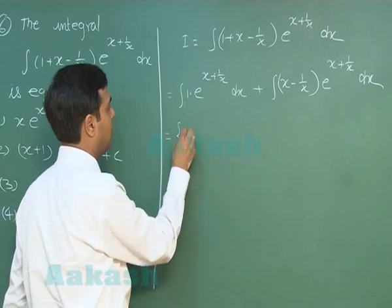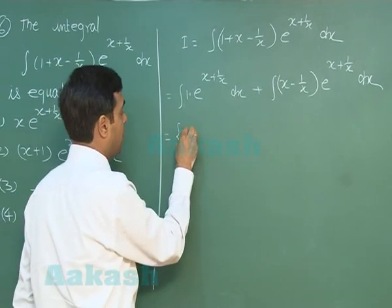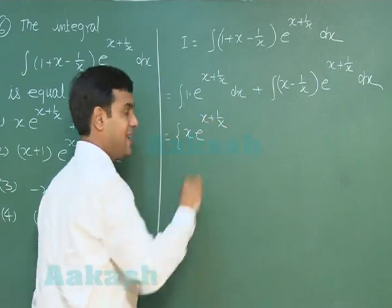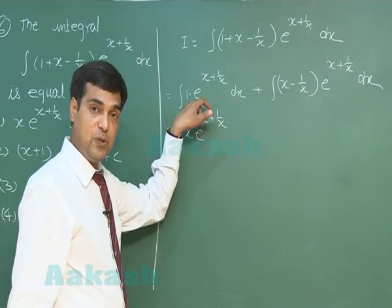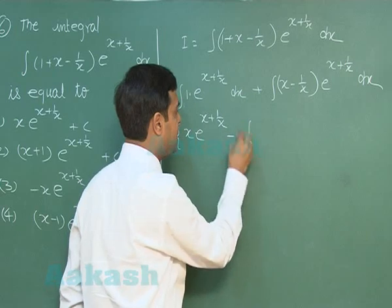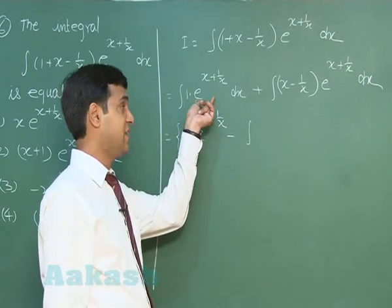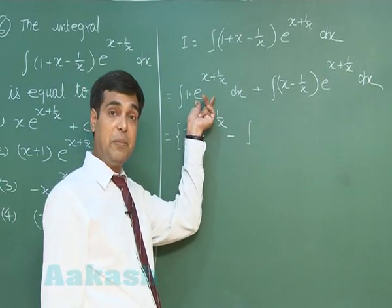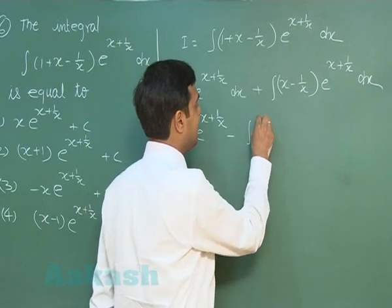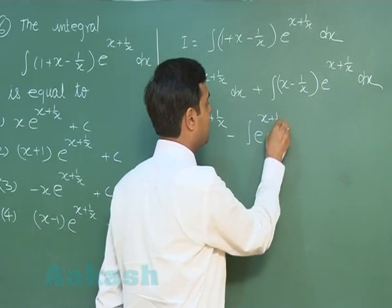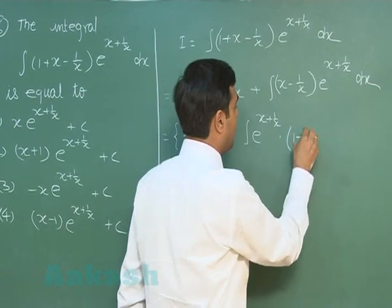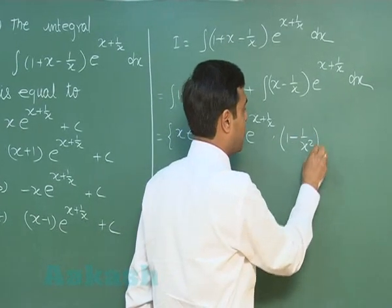Applying by-parts on the first integral, we obtain x · e^(x + 1/x) minus the integral of x times the derivative of e^(x + 1/x). The derivative of e^(x + 1/x) is e^(x + 1/x) multiplied with (1 minus 1/x²).